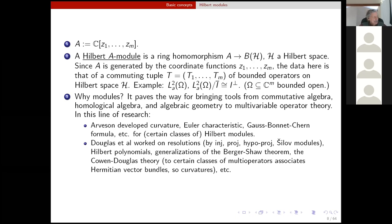Having this mentality, for example, Arveson developed a curvature invariant and proved the Gauss-Bonnet change formula for it. Ronald Douglas introduced resolutions of Hilbert modules by special classes of modules — for example, injective projective Silov modules — and also defined Hilbert polynomials. With Cowen, he developed what is now called Cowen-Douglas theory, which associates a holomorphic vector bundle to certain classes of multi-operators. As soon as you have a Hermitian vector bundle, you have canonical connections and can make sense of curvatures. Both Arveson and Douglas, having the mentality of Hilbert modules, found ways to define curvature invariants.